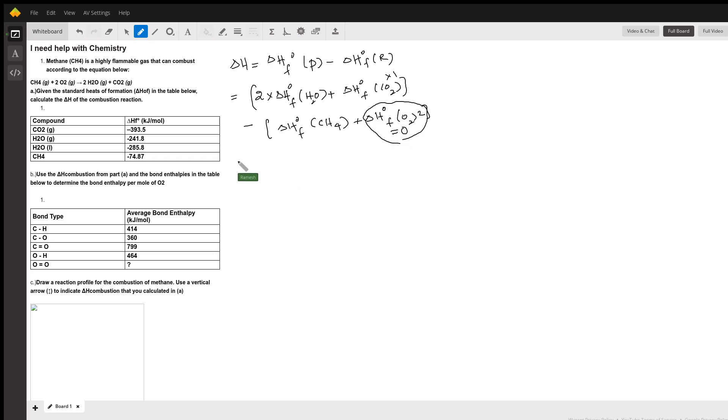Then, if you plug in the values, H2O is minus 285.8 times 2 plus your CO2 value minus 393.5 minus your CH4 value. And sorry, there are two values given for H2O, both liquid and gas phase.